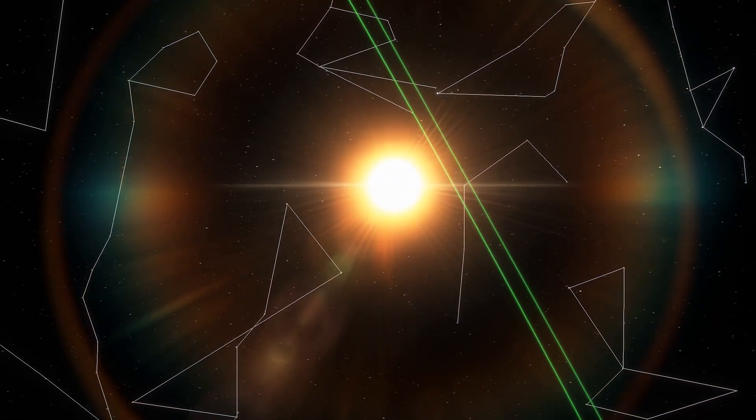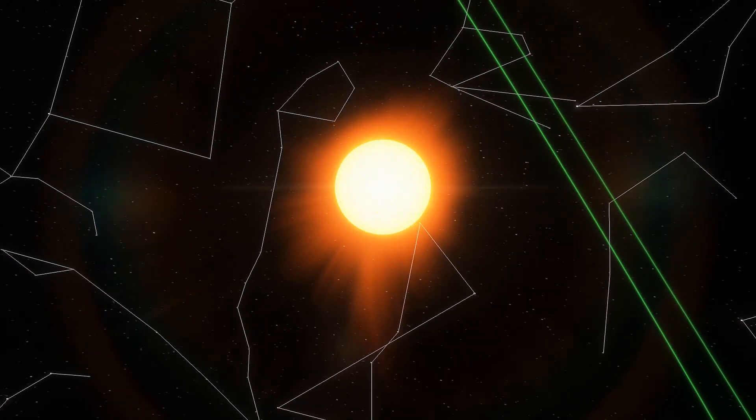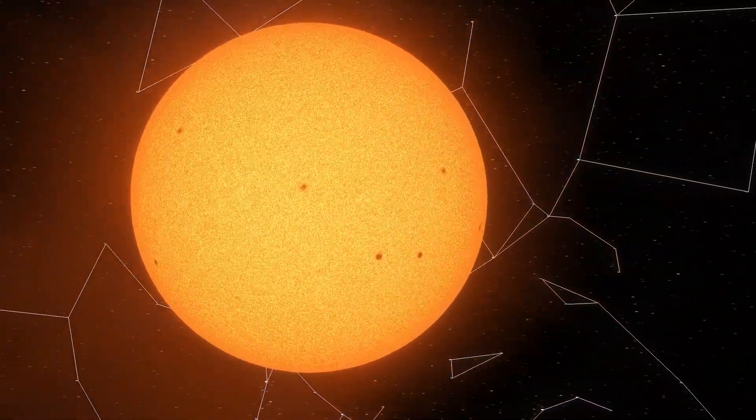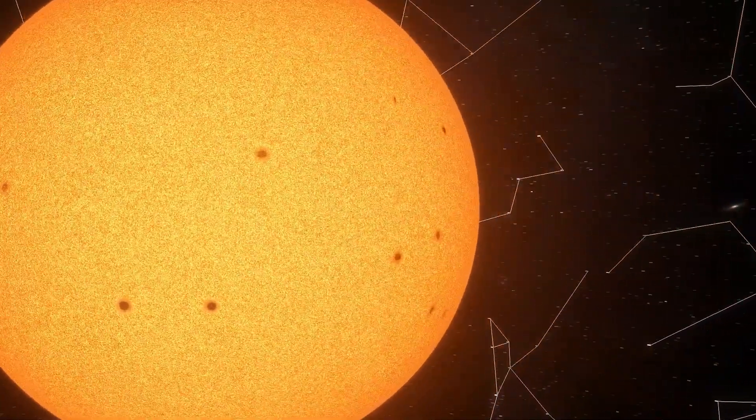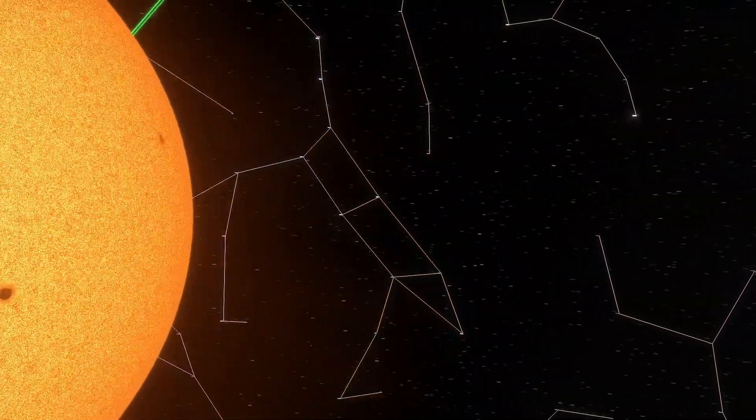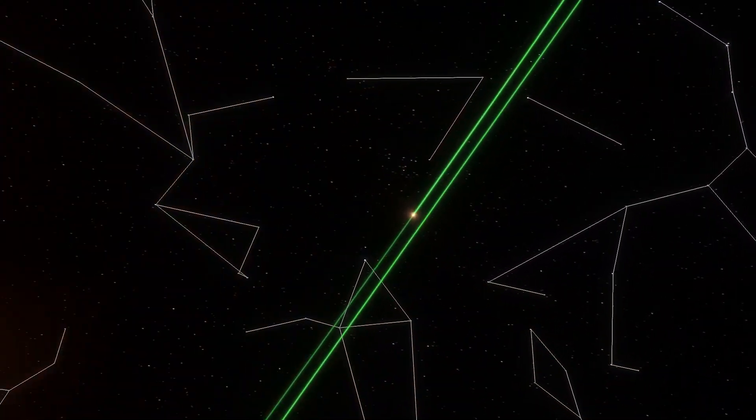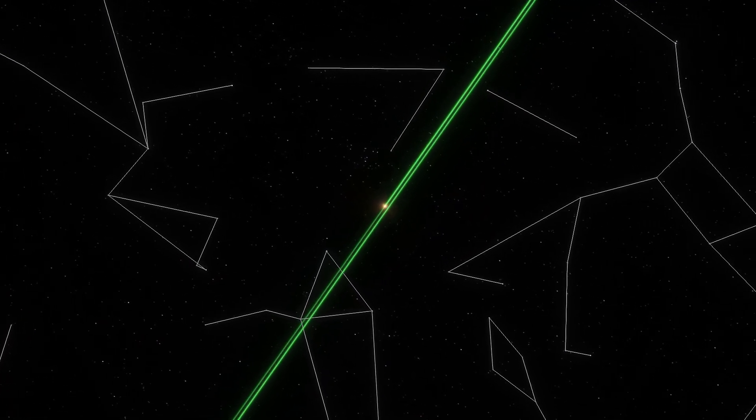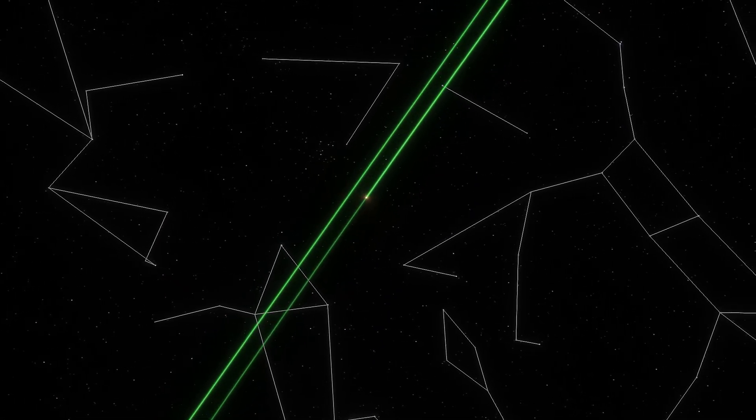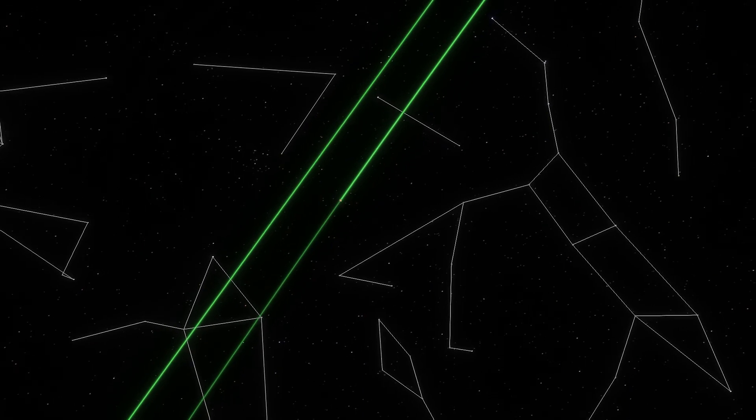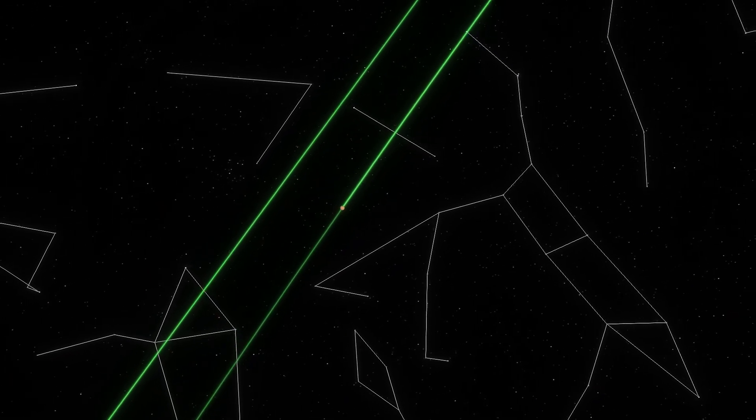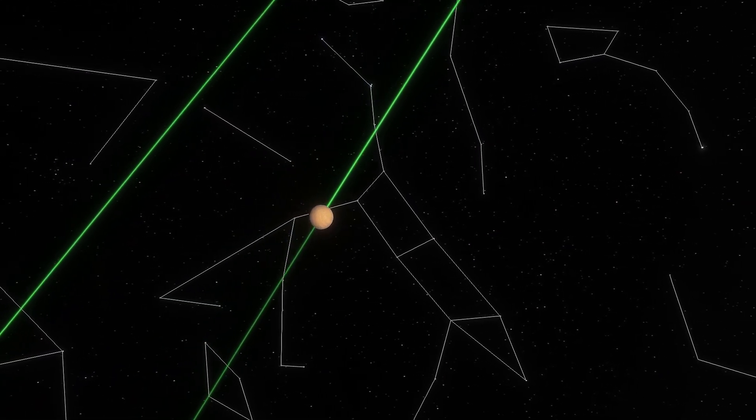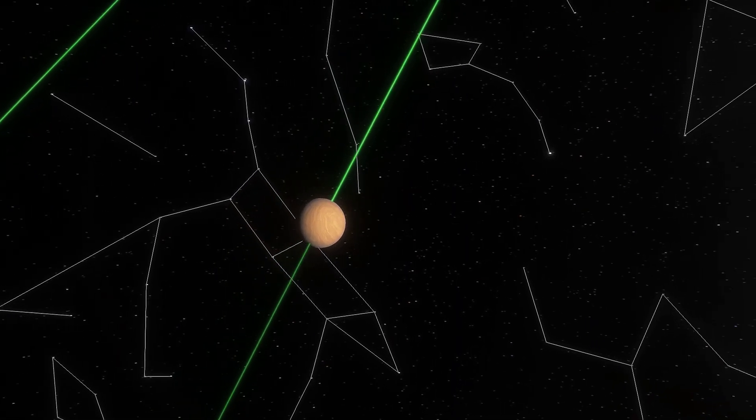That would not be a problem, except that red dwarfs like Proxima Centauri can be rather temperamental. Frequent stellar flares, which emit significant amounts of ultraviolet light, have likely destroyed any remnant of a potential protective ozone layer. Indeed, the UV and X-ray radiation from the intense flare activity of Proxima Centauri may render the star-facing surface of Proxima b entirely sterile. Such observations are bad news for all potentially Earth-like planets around red dwarfs, including those around TRAPPIST-1. The radiation from these stars may even be intense enough to slowly strip atmospheres off of their planets.